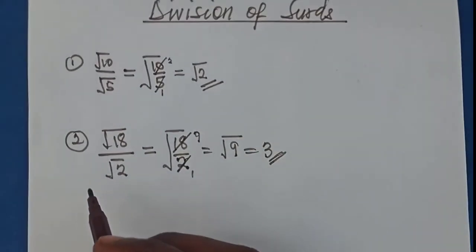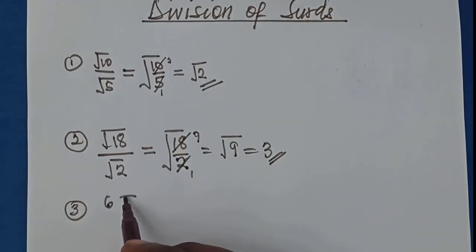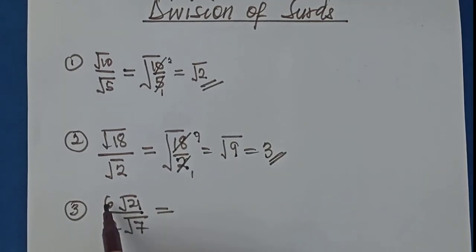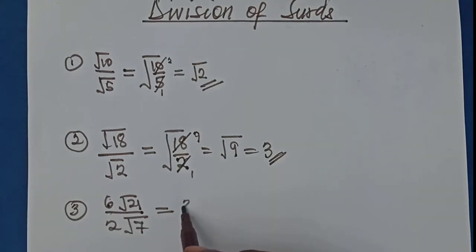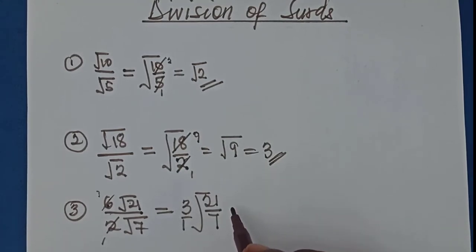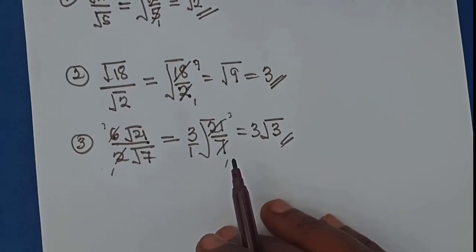What about 6 root 21 over 2 root 7? The rational part divides the rational part: 6 divided by 2 gives 3. Then root 21 divided by root 7 becomes root 21 over 7 — 21 divided by 7 is 3 — so we have 3 root 3. That's the answer.